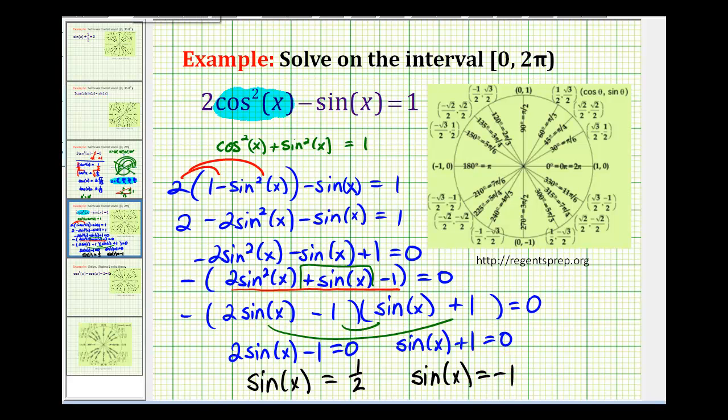At this point we can use a unit circle to determine which angles have these sine function values. Remember on the unit circle, sin(θ) = y. So we'll look for y-coordinates of 1/2 and -1.